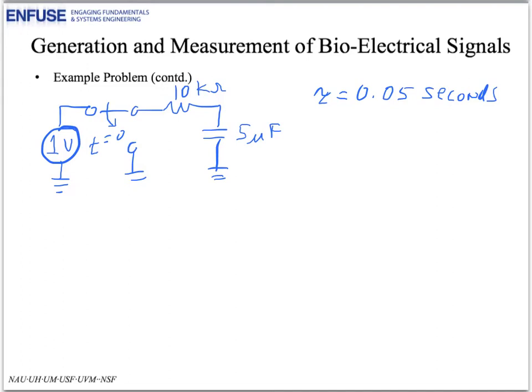So, we know that for T greater than 0, the voltage across the capacitor, which is V sub C, is equal to 1 volt from our source over here, times E to the minus T over tau.